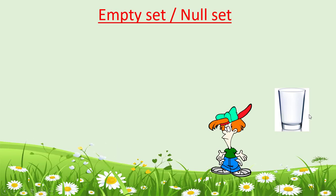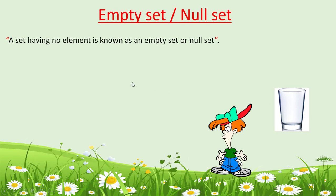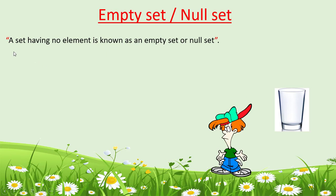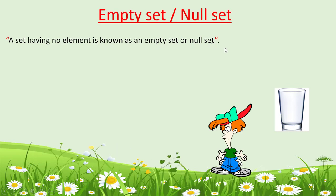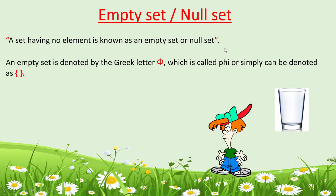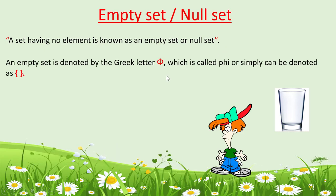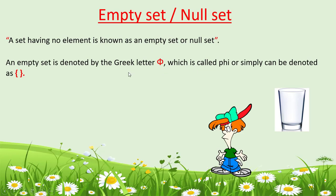Similarly, when there is no element in a set, the set is empty. A set having no element is known as an empty set or null set. An empty set is denoted by the Greek letter phi (φ), or simply by empty brackets {}.